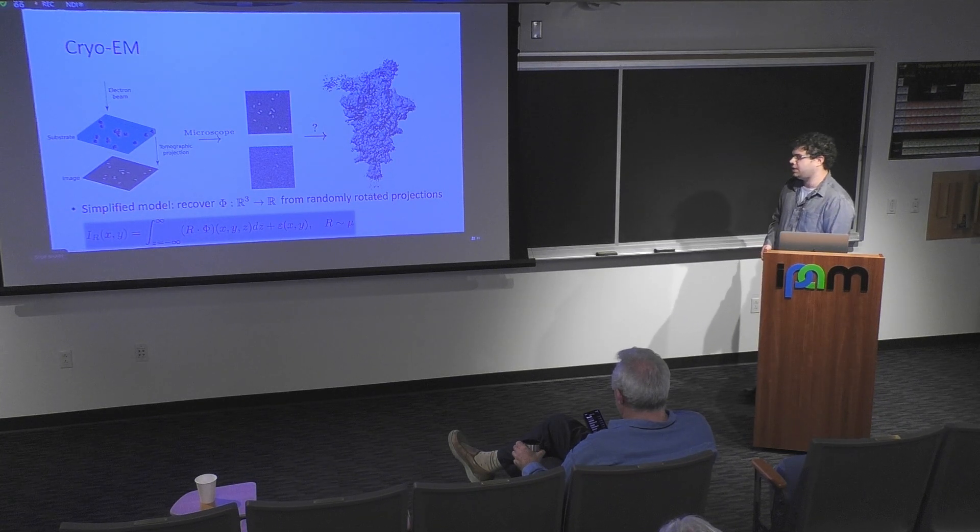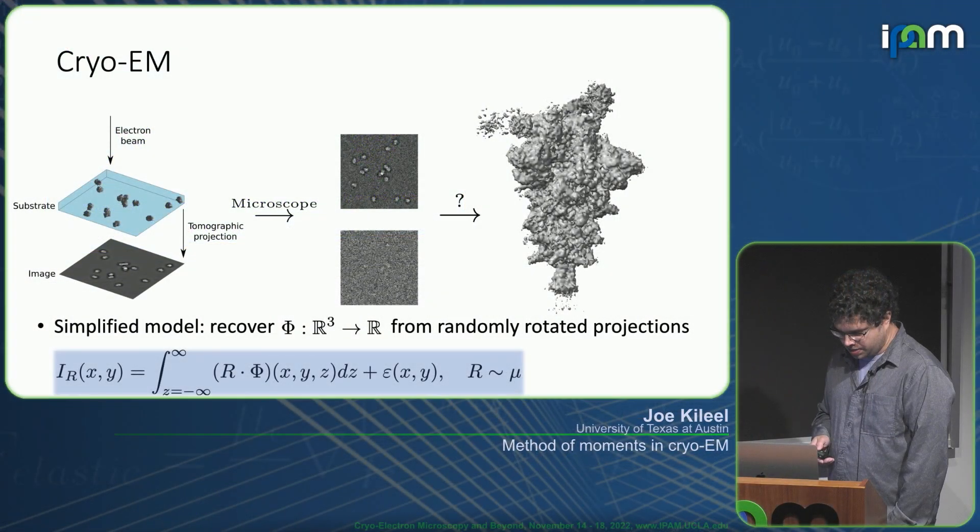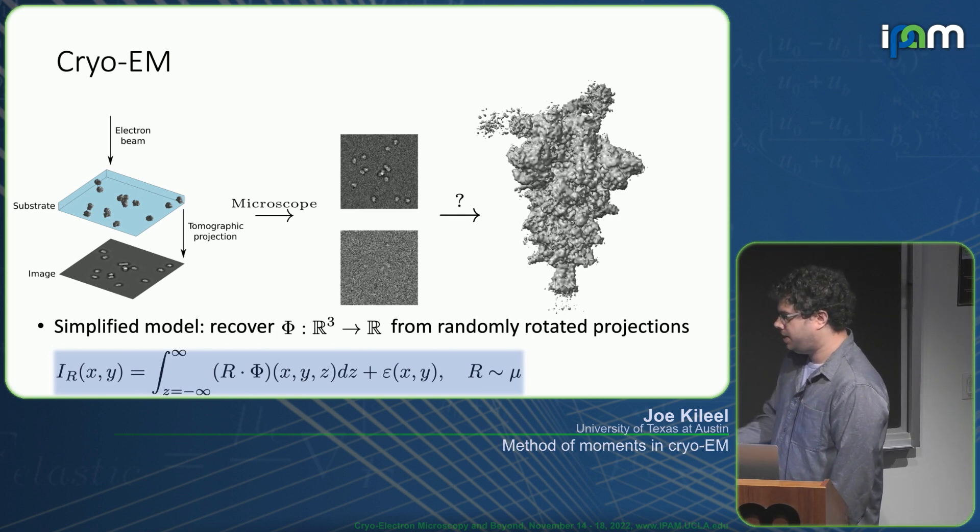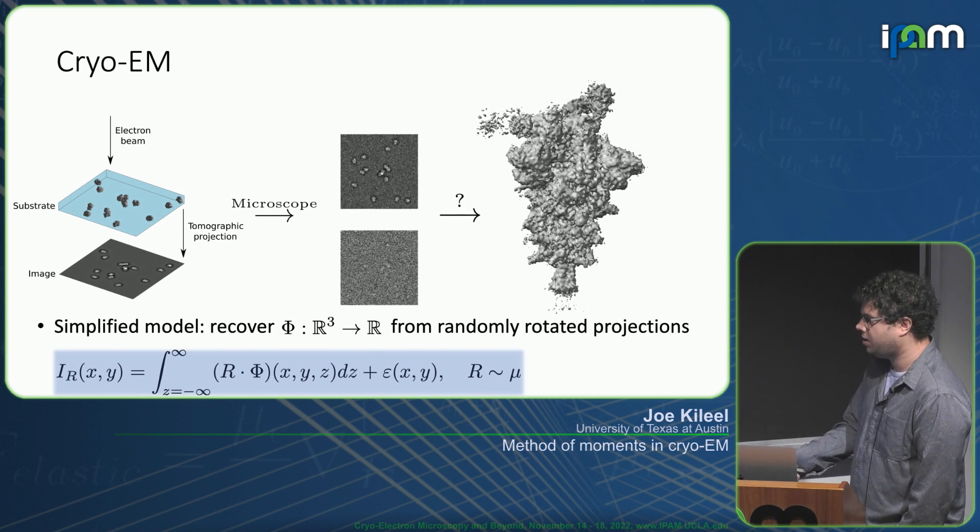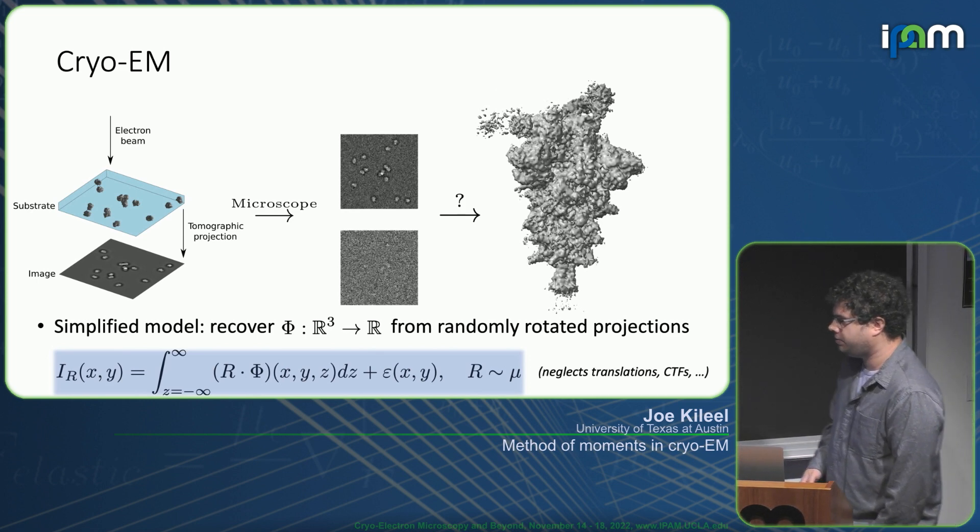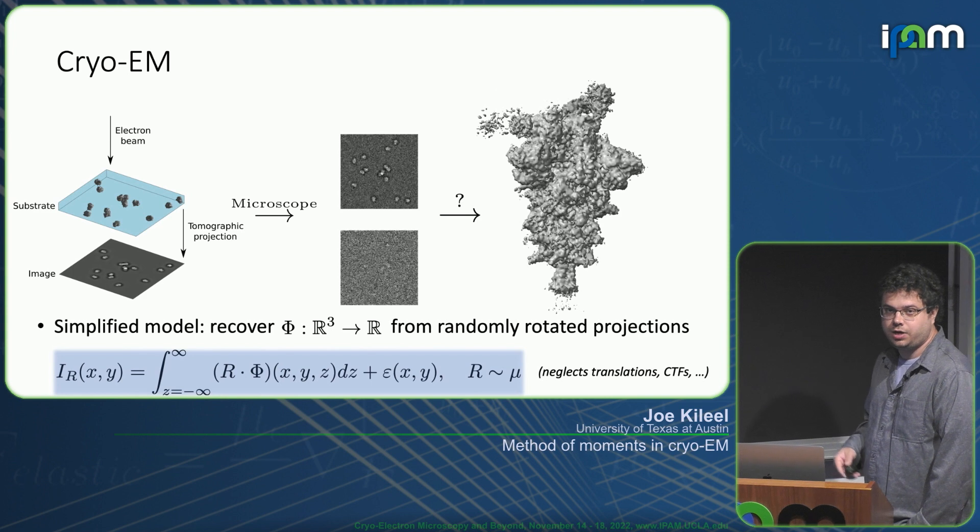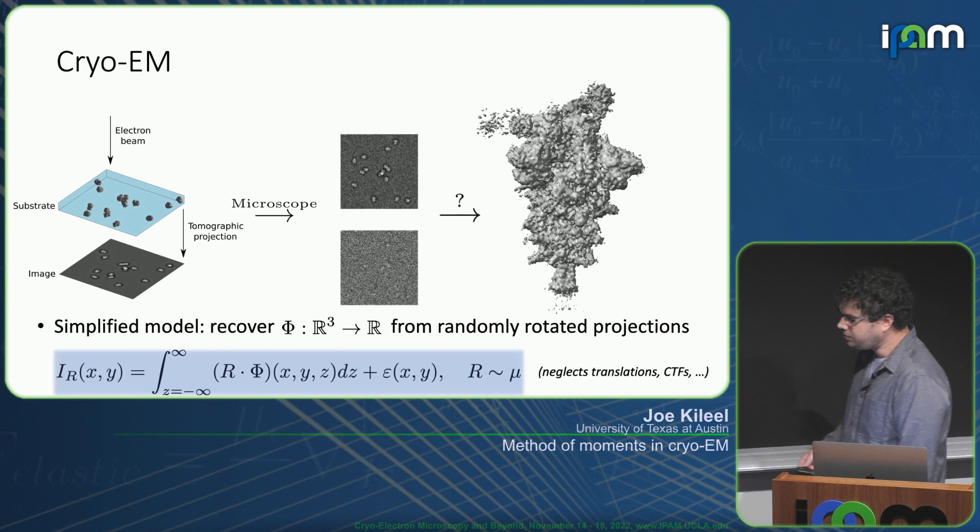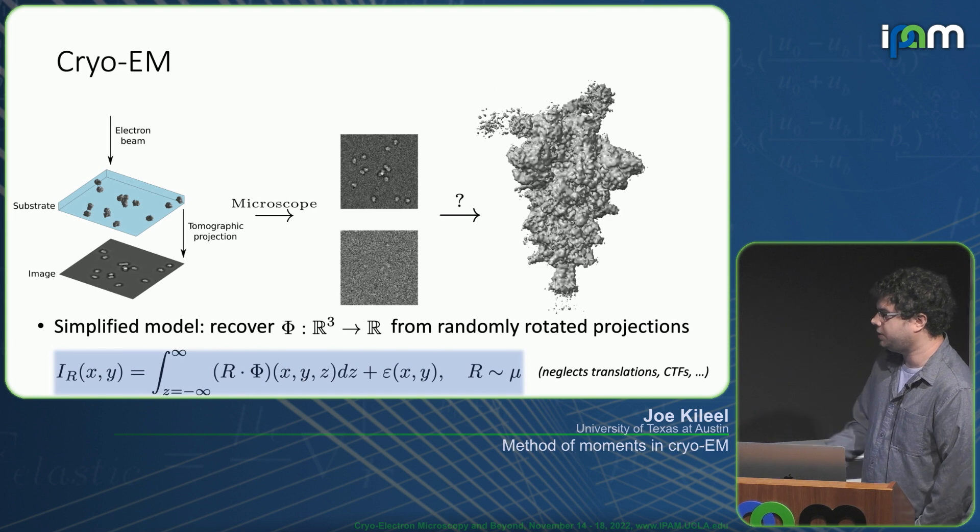I'll primarily focus on the following simplified mathematical model for cryo-EM, which is already quite rich and challenging. We'll try to recover a function phi from R3 to R from randomly rotated projections. The image associated with a rotation R, I denote by I sub R, is formed by applying rotation R to phi, integrating out Z, and adding noise epsilon.